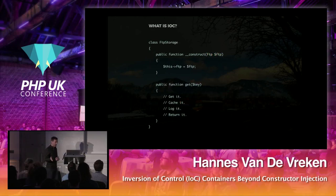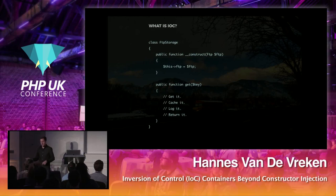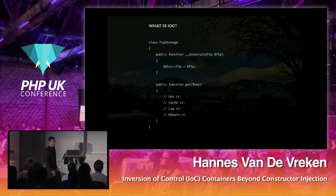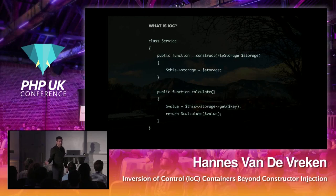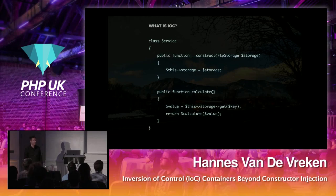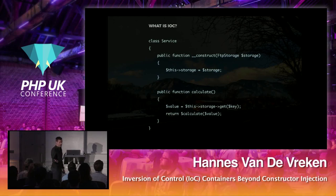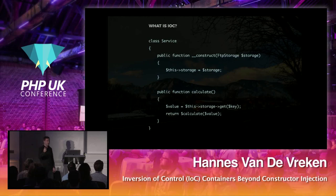We create a new FTPStorage class and copy-paste some code. We give it a new method name — get — then a key or file name. And we refactor the service class to inject the FTPStorage class instead of the FTP connection directly. That's a super simple refactoring, and now the service class is super clean — it does one thing only: getting something from storage and returning the calculation on that value.